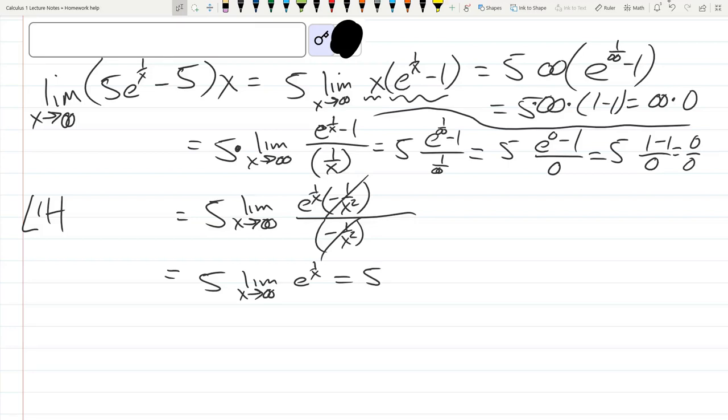Now we can plug in infinity. e^(1/∞), which is 5 times e^0. e^0 is 1, so we just get 5. And you can see that right up at the top there.